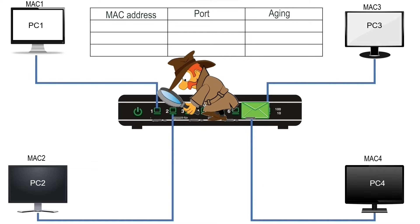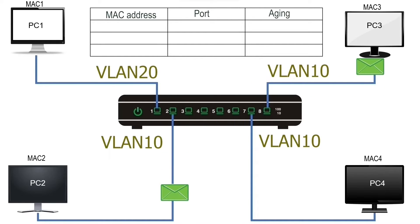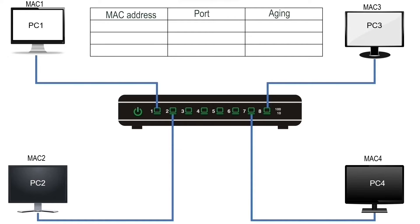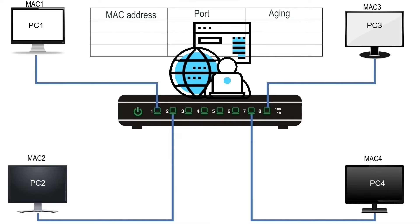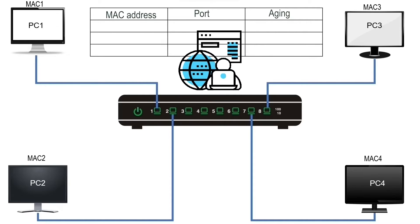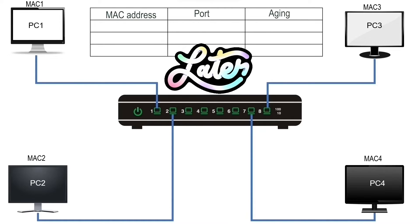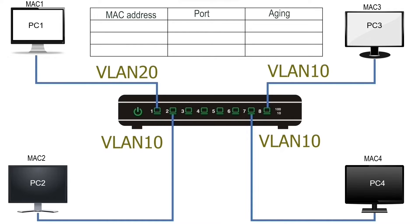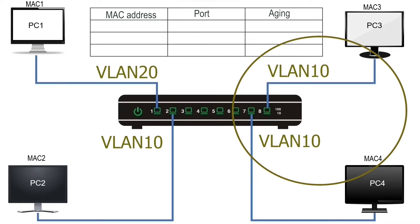After making a forwarding decision, the switch finds ports having the same VLAN configuration as the incoming port and forwards the frame only from those ports. By default, all switch ports belong to VLAN 1, which is the default VLAN on all Cisco switches. We can create custom VLANs in global configuration mode and apply them to switch ports. If two ports belong to different VLANs, they do not share broadcast messages; if they belong to the same VLAN, they do.